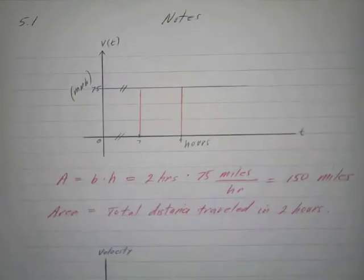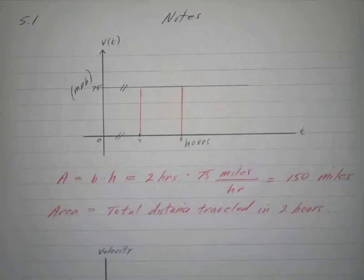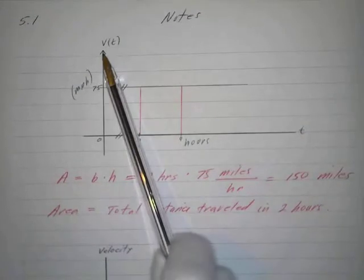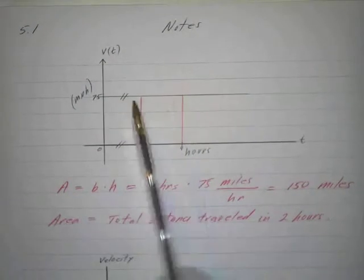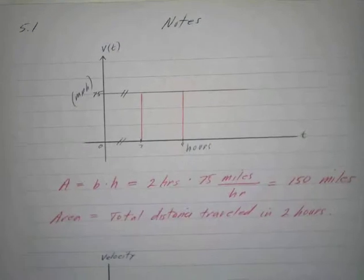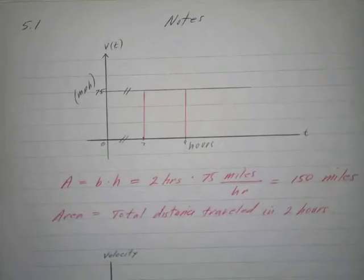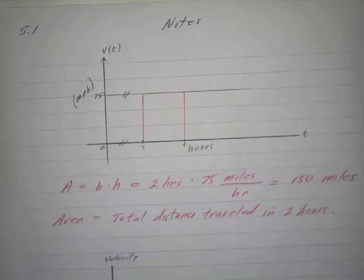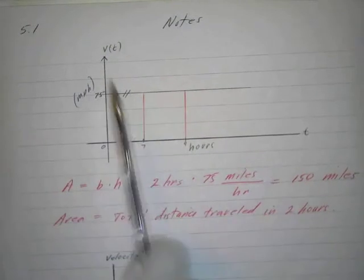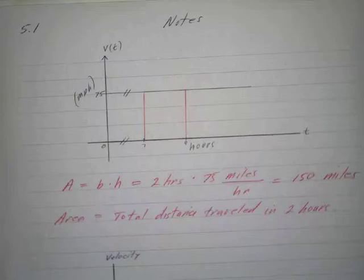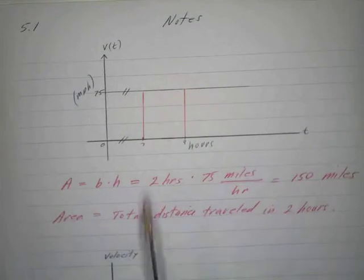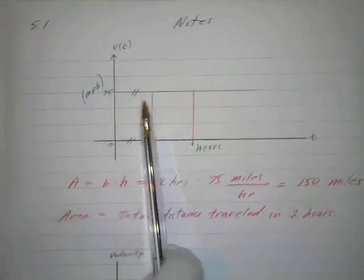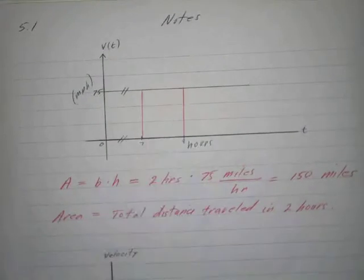The way it works out is that if we have a velocity curve and we take the area under that curve — if we have a constant velocity — we actually get the distance traveled. So this area ends up giving us the value of the distance traveled. If you do have a velocity curve, this is one good way to find the distance traveled.